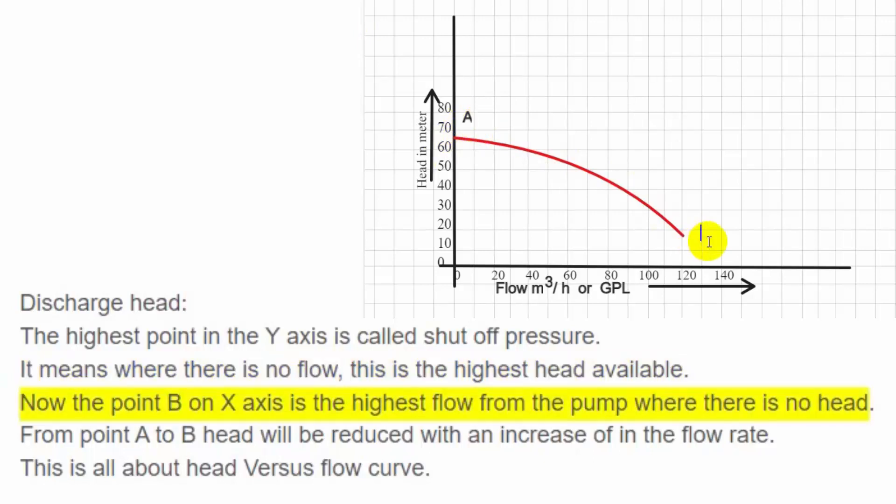Now the point B on the X axis is the highest flow from the pump where there is no head. From point A to B, head will be reduced with an increase in the flow rate. This is all about head versus flow curve.